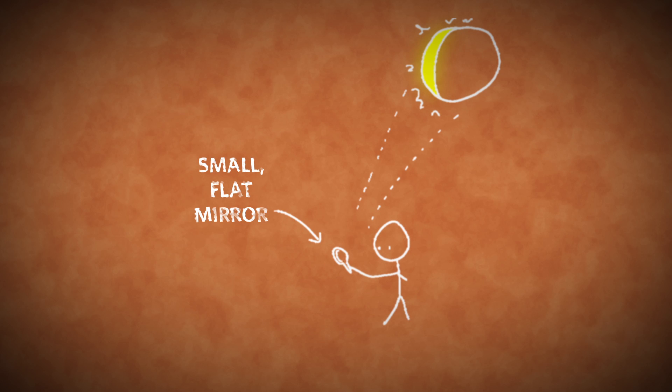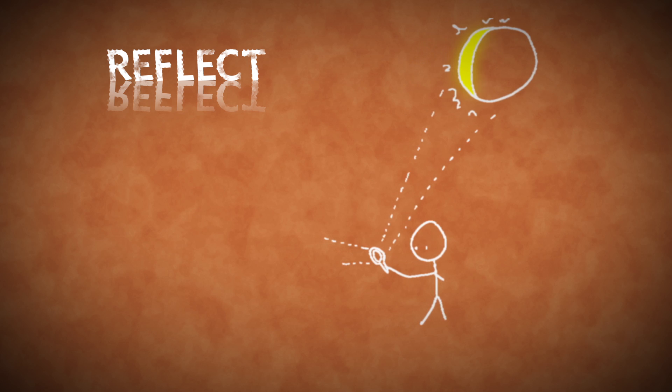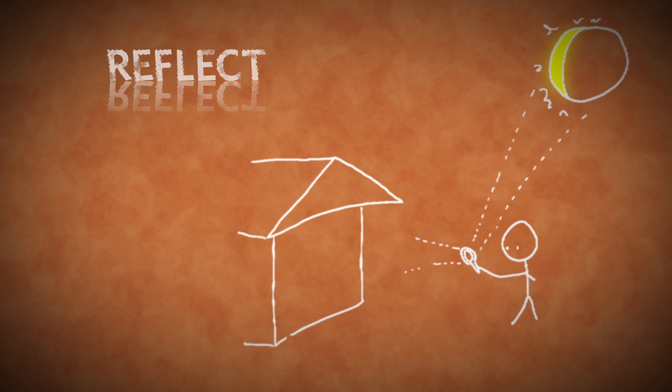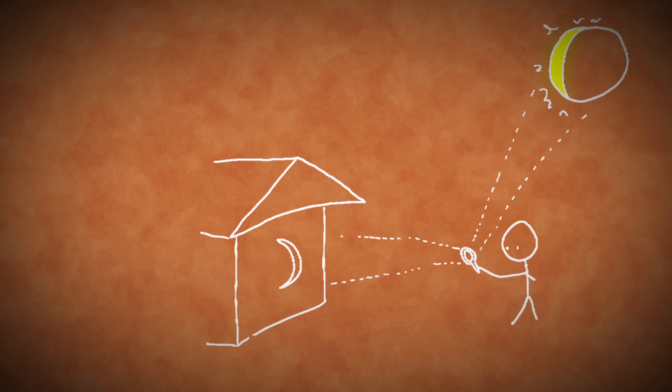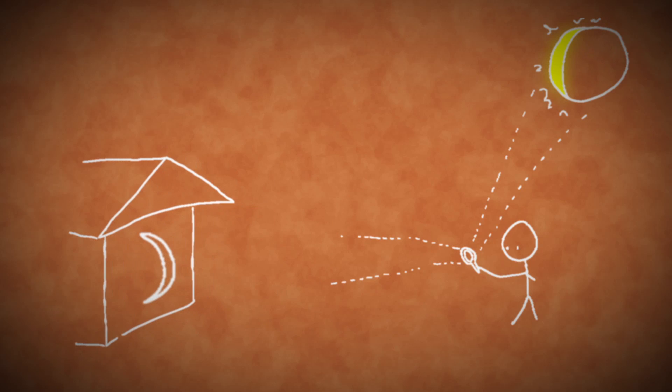You can also use a small, flat mirror to reflect a low-resolution image of the sun onto a shaded surface, such as the side of a building. The farther away the building is, the larger the sun's image will be.